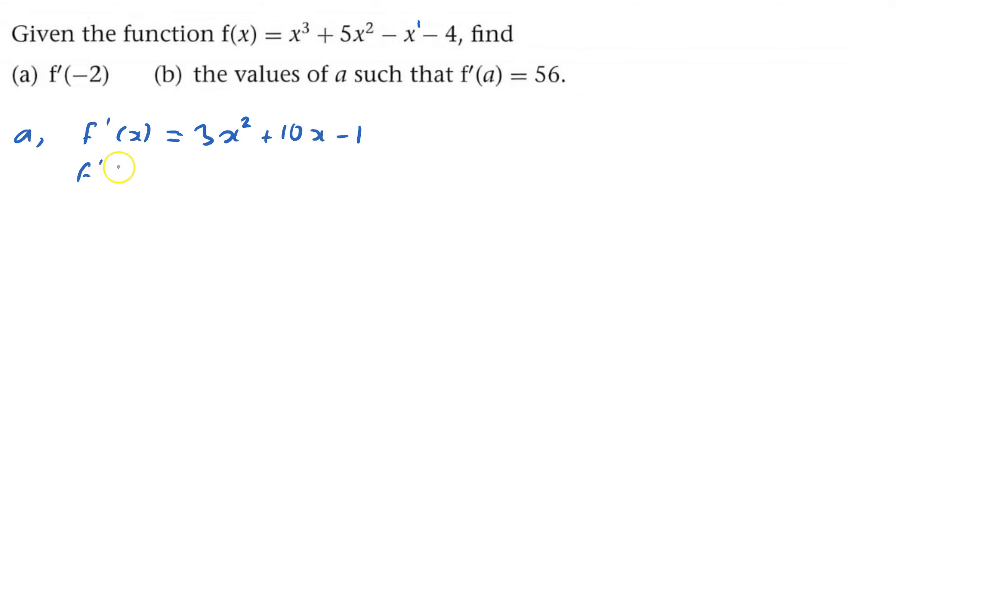And I've got to work out f'(-2), so be careful, that means we've got to do 3 times (-2) squared plus 10 times (-2) minus 1, which equals... that'll be 4 times by 3 is 12, minus 20, minus 1, so that equals -8... that equals -9.